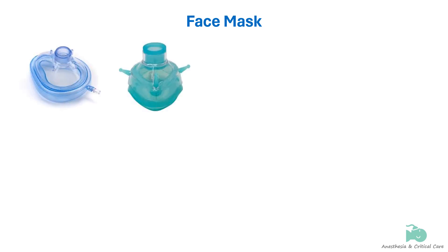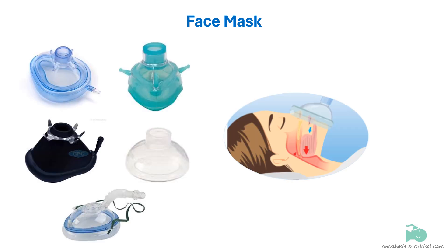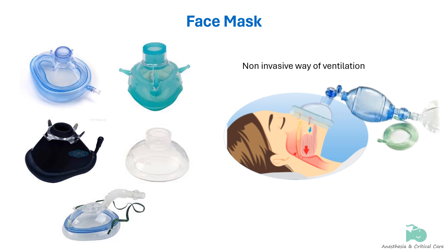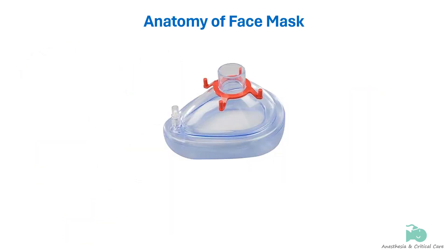A facemask is an interface device between the patient's upper airway and the breathing system. It allows gas administration to the patient from the breathing system without introducing any apparatus into the patient's mouth. It may be made of black rubber, clear plastic, elastomeric material, or disposable plastic, or a combination of these. The parts of a facemask are the body, seal, and connector.